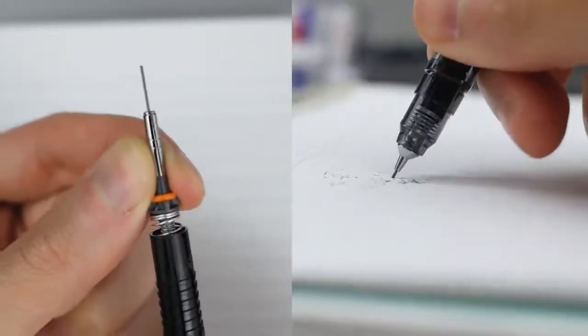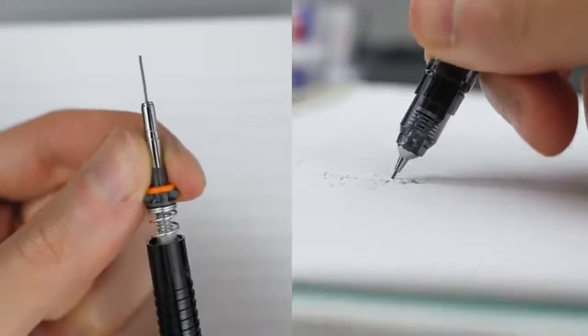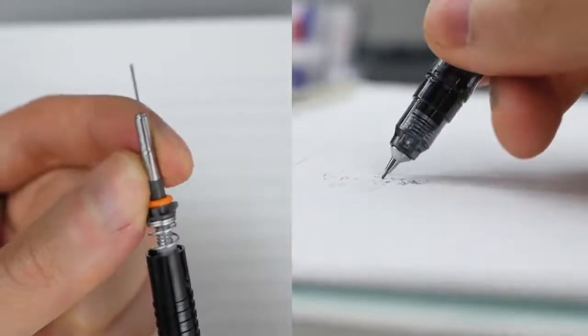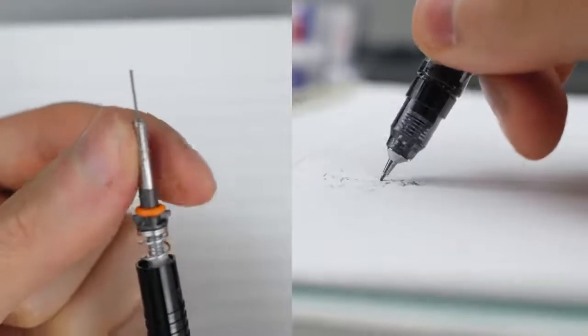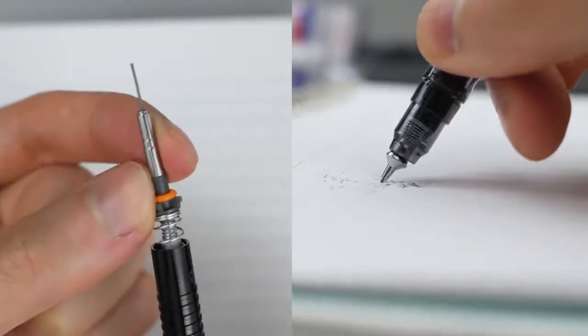With enough pressure the spring will compress and push deeper inside the case. But it also has a lot of flexibility to bend off axis from the rest of the body when you press down on the lead at an angle.